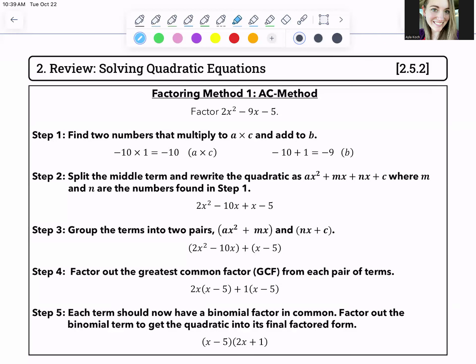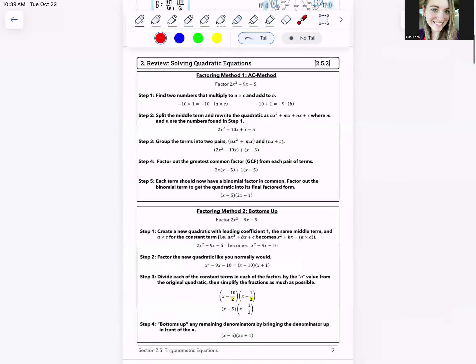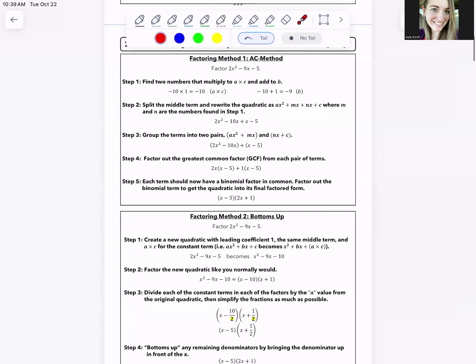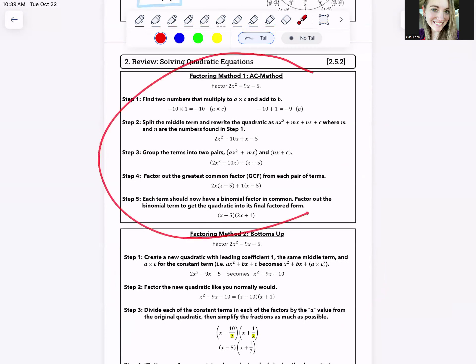All right, a quick review of solving quadratic equations and a quick review of factoring. I have on this page listed two of the most common factoring methods for when the leading coefficient of a quadratic is not one, which is the AC method. And then my favorite method, which is the bottoms up method. It's wild that the bottoms up method works, but it does. And that's my favorite. So I've given a quick review of these here.